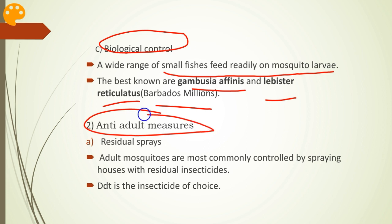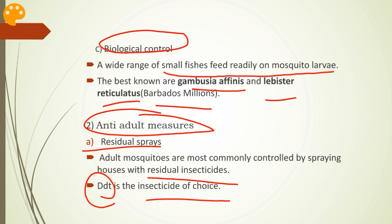Coming to anti-adult measures. The first one is residual sprays. Adult mosquitoes are most commonly controlled by spraying houses with residual insecticides. DDT is the most common residual spray used and is the insecticide of choice. Resistance to insecticides has become common among mosquitoes, especially after several years of exposure to DDT. Because of this, periodic tests must be carried out to determine the susceptibility of different mosquito species to various insecticides so that only potent insecticides can be applied.